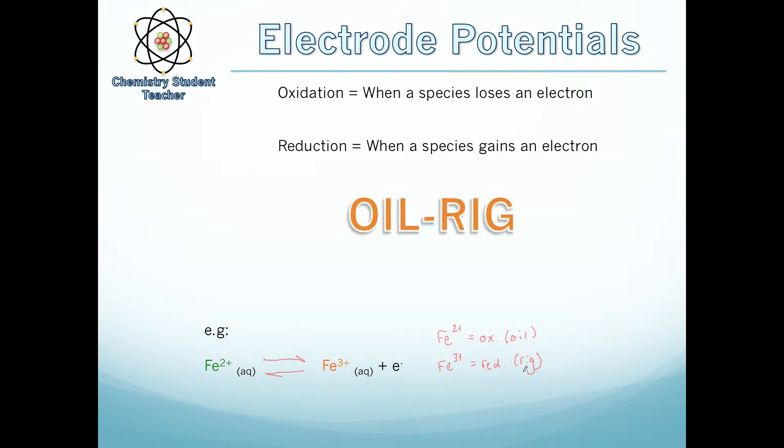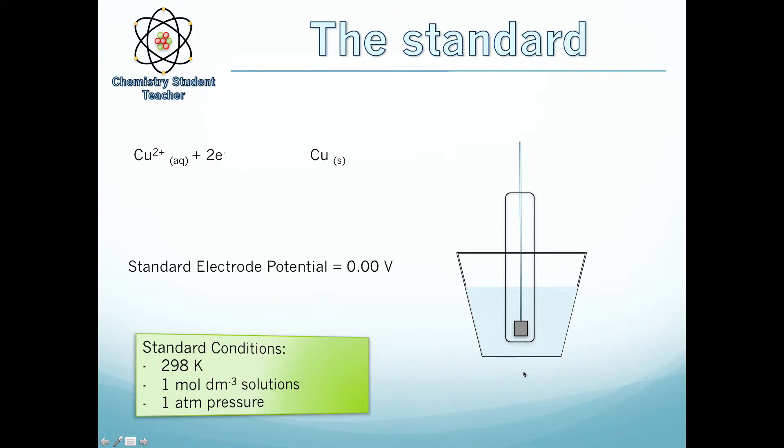So how does this apply to electrode potentials? Well, if we have this equilibrium here, copper 2+ plus two electrons goes to copper solid. We may want to know how easy is it to lose electrons or how easy is it to gain electrons. Well, to do this we have to use a standard.